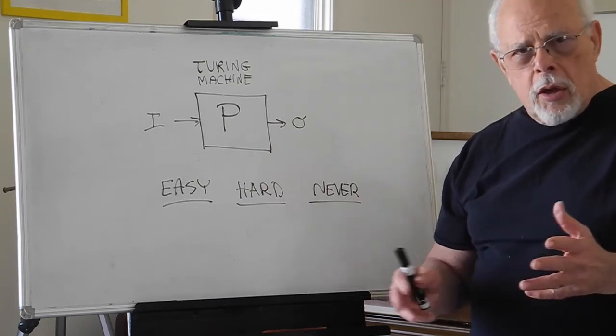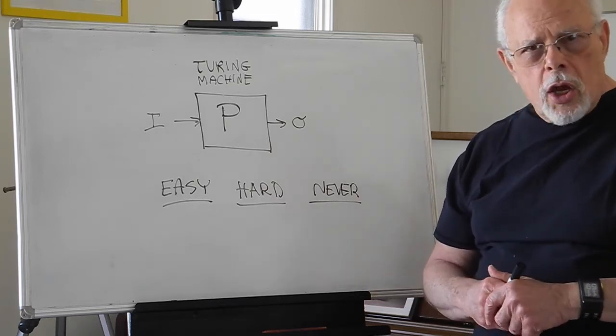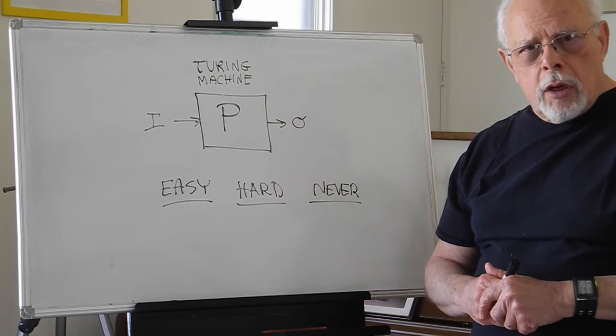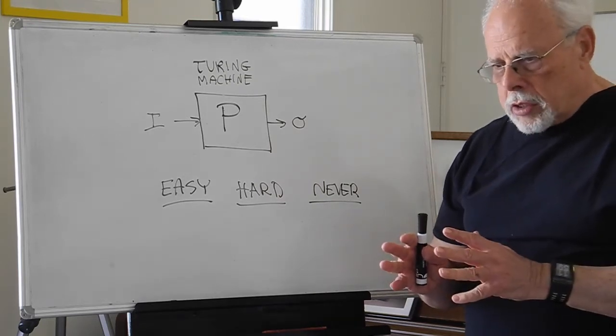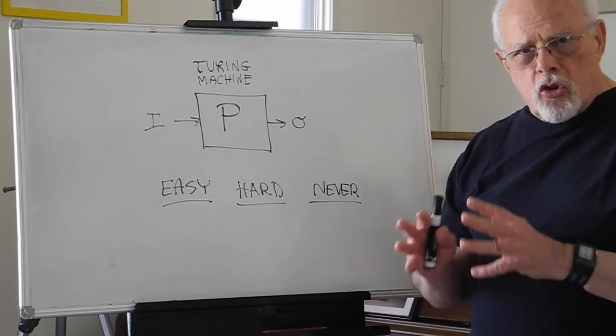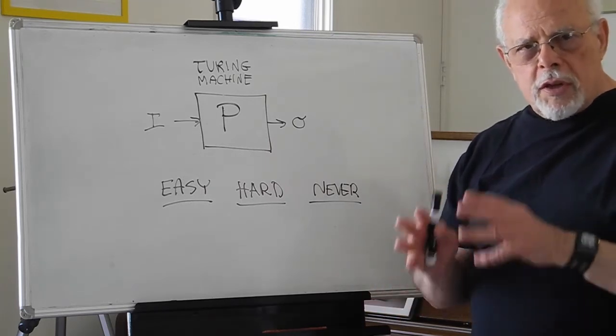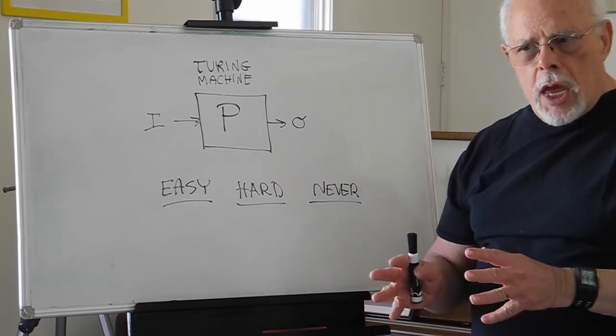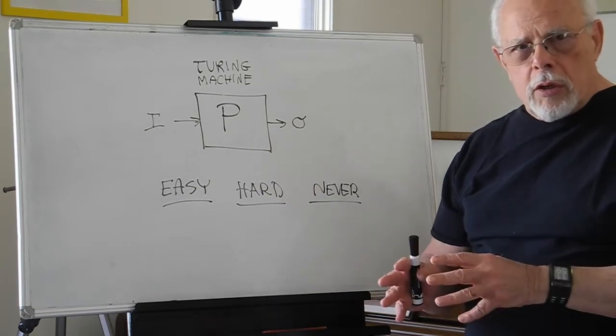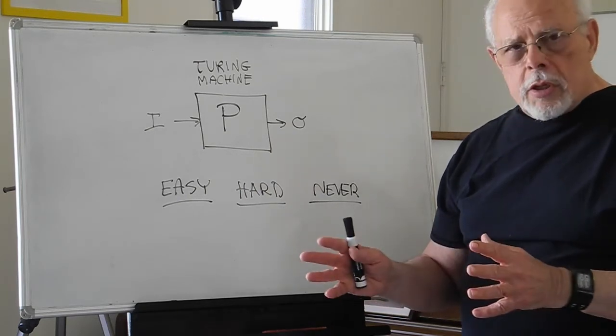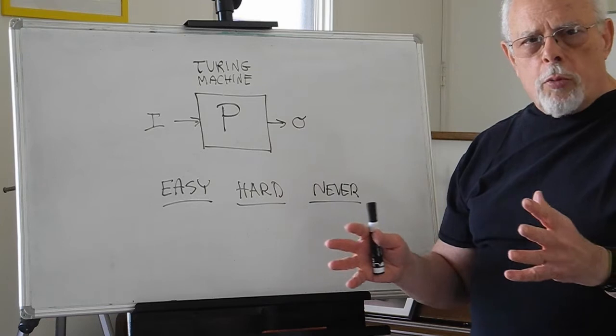It began in 1936, when Alan Turing published a paper that eventually changed and transformed civilization. It became the blueprint for all the computers that have changed and transformed our life.